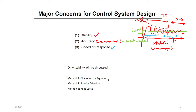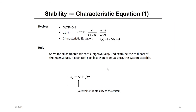Today, let's start with method number one: go directly to the characteristic equation. What is the characteristic equation? Remember the OLTF — the open loop transfer function — it's the feedforward times the feedback transfer function. The CLTF, the closed loop transfer function, is G over 1 plus GH. The denominator — this equation — we call it the characteristic equation. If you solve the roots of the characteristic equation and check the real part, this real part will determine the stability of the system.